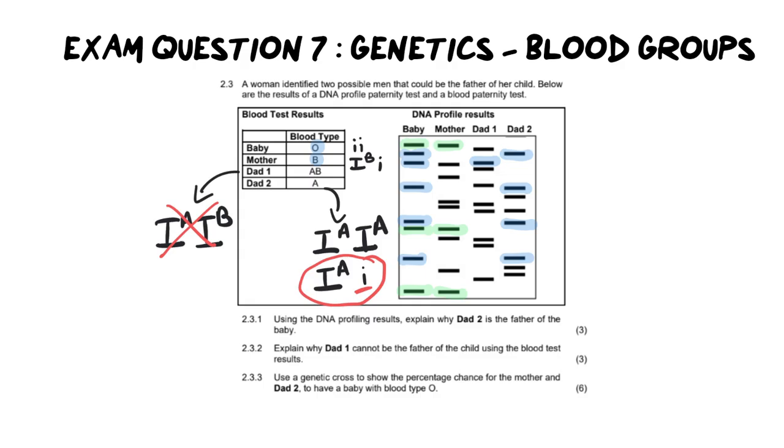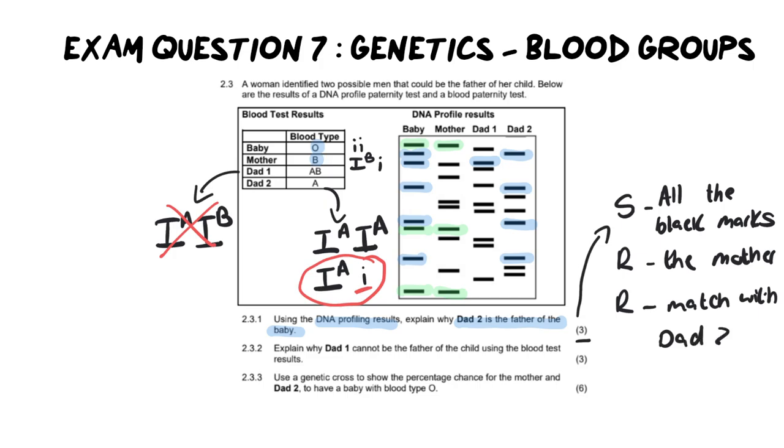So first things first, it says, using the DNA profiling results, explain why dad two is the father. Now, it is an explain question for three marks. Remember, when you do an explain question, you need to have a statement and then a reason. In this instance, you'll need to give two reasons to get your three marks. So what is our statement? Well, we're going to say something like, all the black marks that don't match up with the mother, they match with dad number two. So what you're doing is, and I've shorthanded this answer, but your answer is, all the black marks that the child has that do not match the mother, match dad two. Which is true. All the outstanding pieces are coming from dad two.